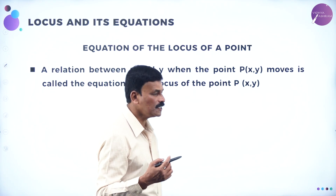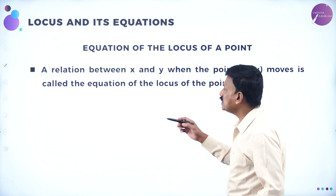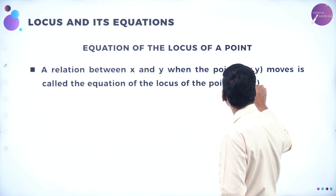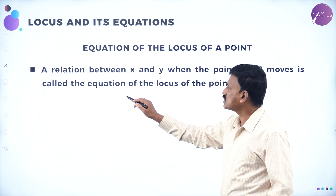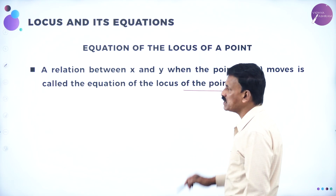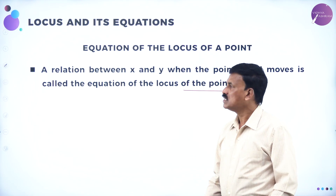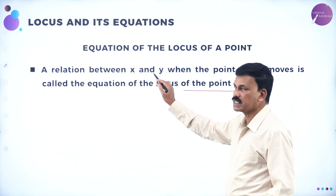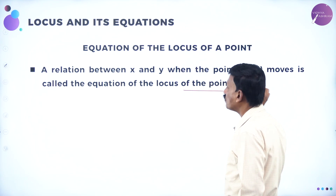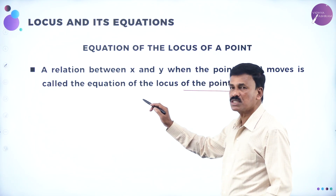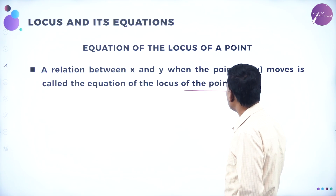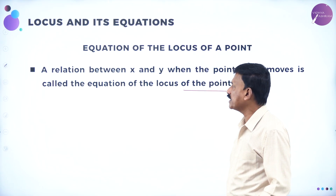A relation between X and Y, when the point P(x, y) moves, is called the equation of the locus of the point P(x, y).